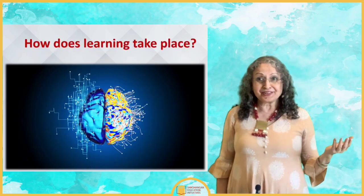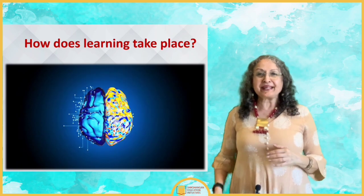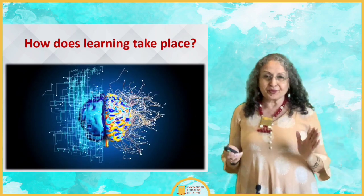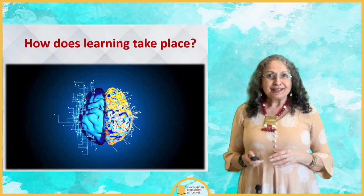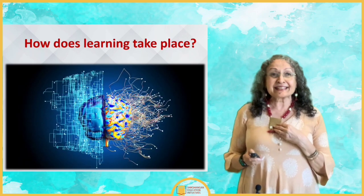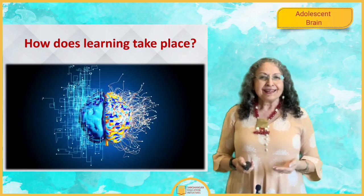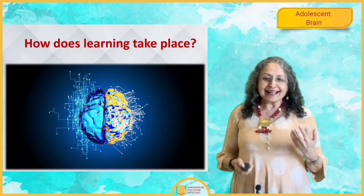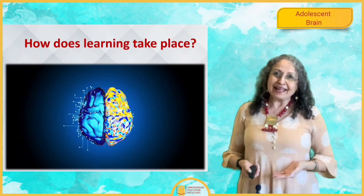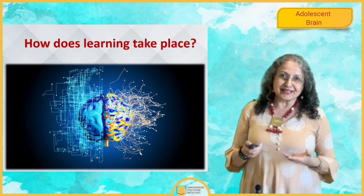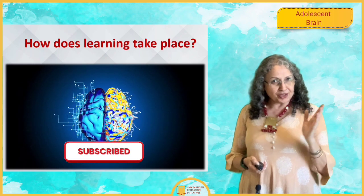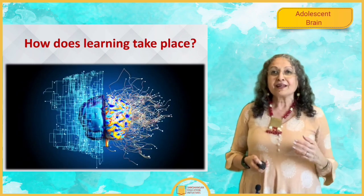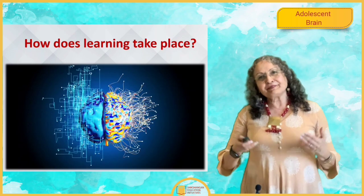Hello, and this is the third episode of our series on how does learning actually happen. For this third episode as well as the fourth episode, we are going to be focusing on how learning takes place in the adolescent brain. During the adolescent stage, there are certain changes which happen in the human body as well as in the brain. We need to look at how we can help children deal with these adolescent changes and still ensure that good learning is happening. Stay with me and watch till the end, because we will be giving solutions for understanding this adolescent brain.